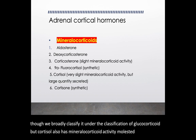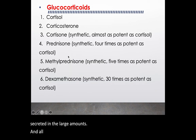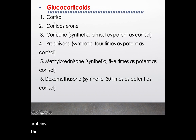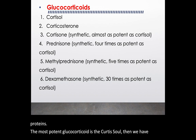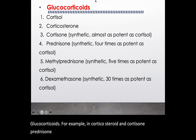Glucocorticoids are those hormones which are involved in the metabolism of fats, lipids, and proteins. The most potent glucocorticoid is cortisol. Other glucocorticoids include corticosterone, cortisone, prednisone, methylprednisolone, and dexamethasone.